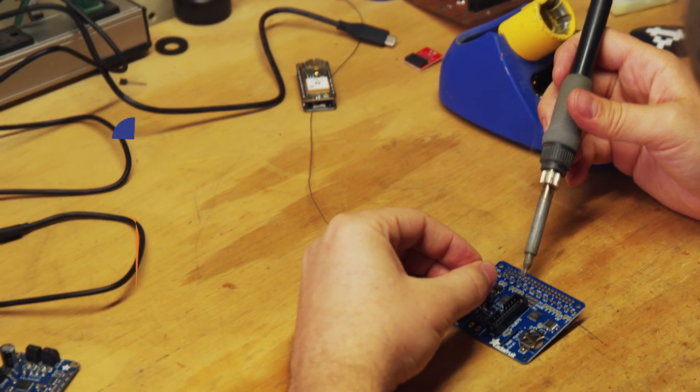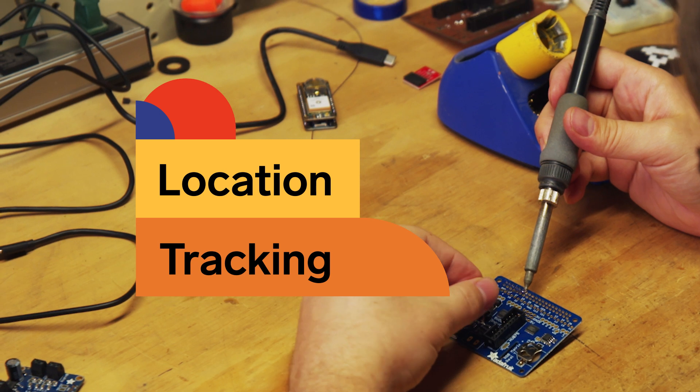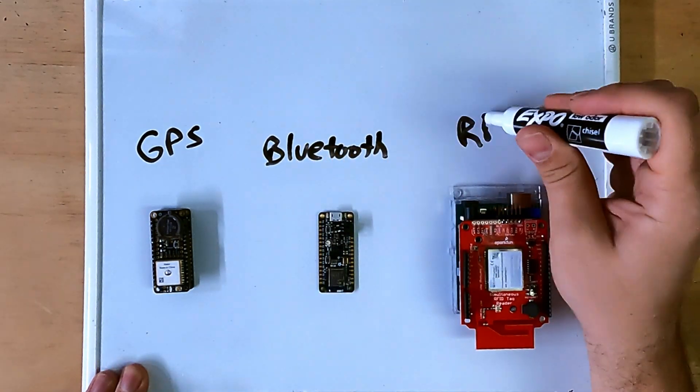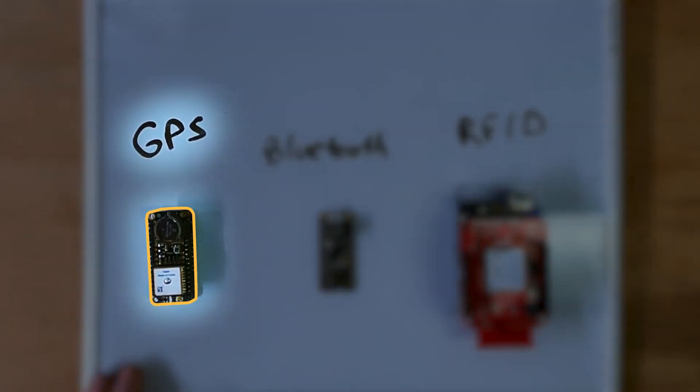The first thing I'm going to need to do is figure out which location tracking technology is best for this project. I've narrowed it down to three different types of technology: GPS, Bluetooth, and RFID. Let's start by taking a look at GPS.